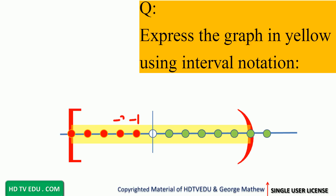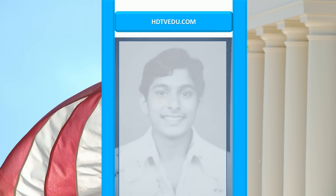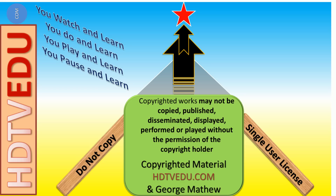The number line runs from negative 5, negative 4, negative 3, negative 2, negative 1, then positive 1, 2, 3, 4, 5, 6. Welcome to HDTVEDU.com — direct and simple education in seconds.